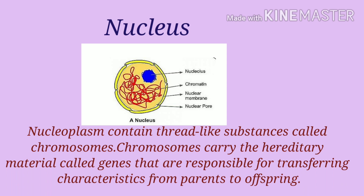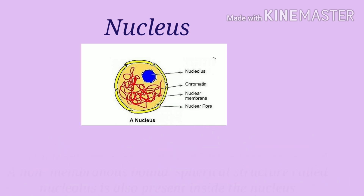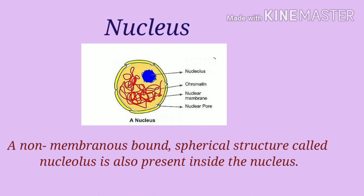When a cell is not in a state of division, the chromosomes are seen as a network called chromatin network. A non-membranous, spherical structure called nucleolus is also present inside the nucleus.